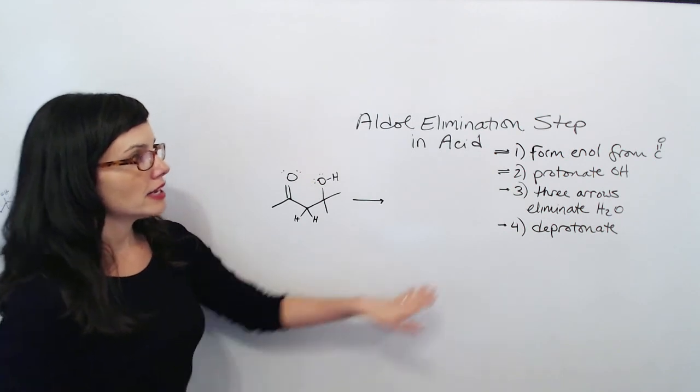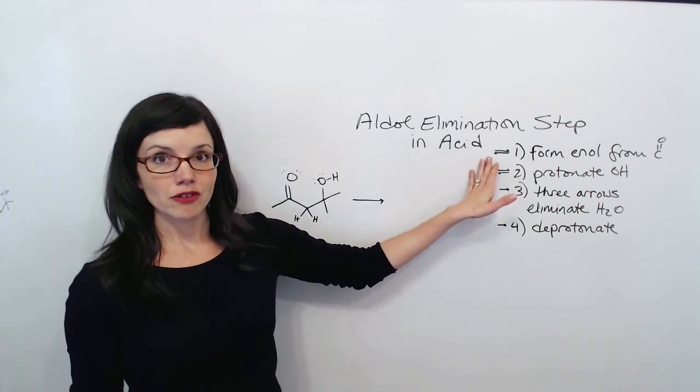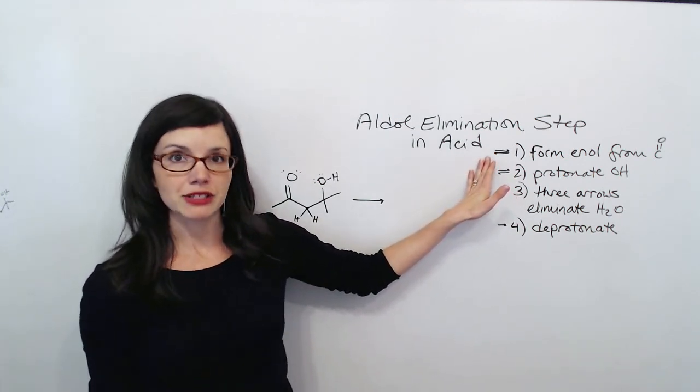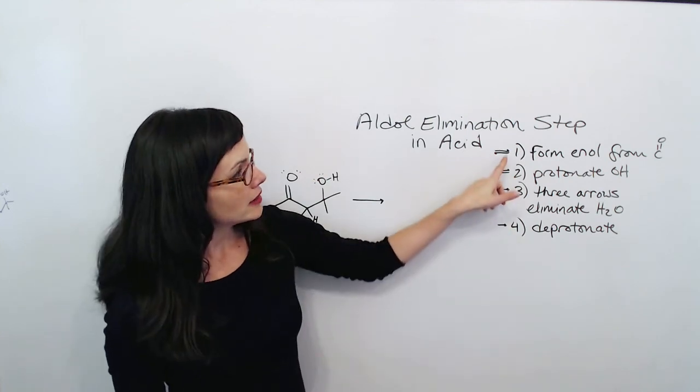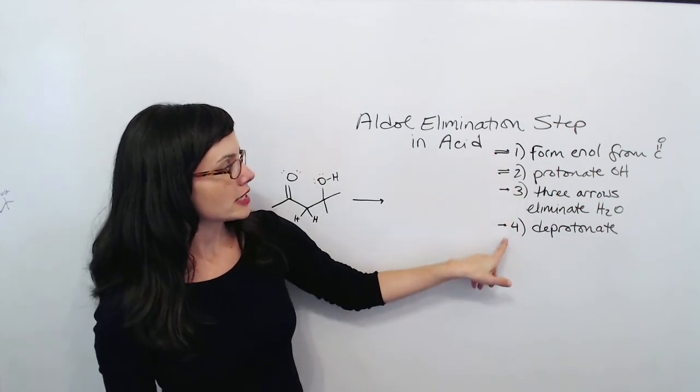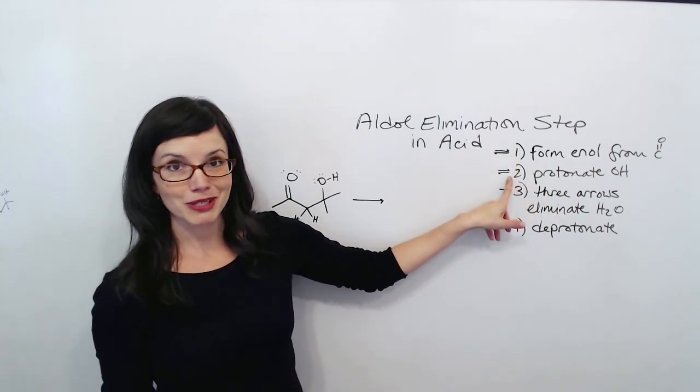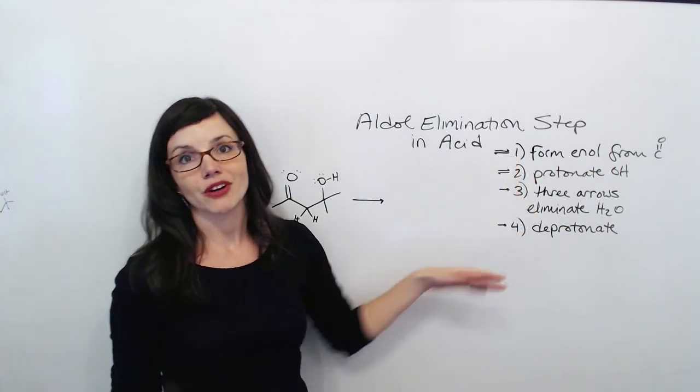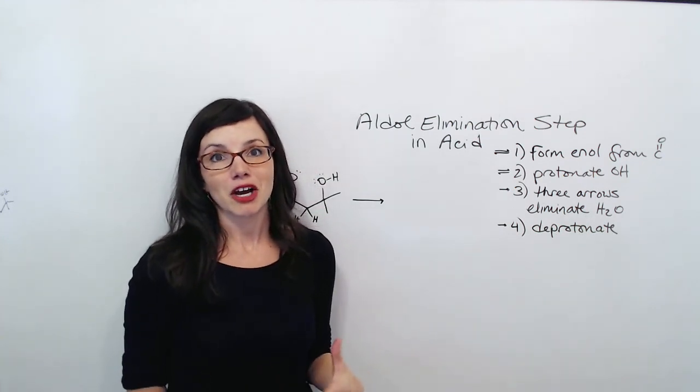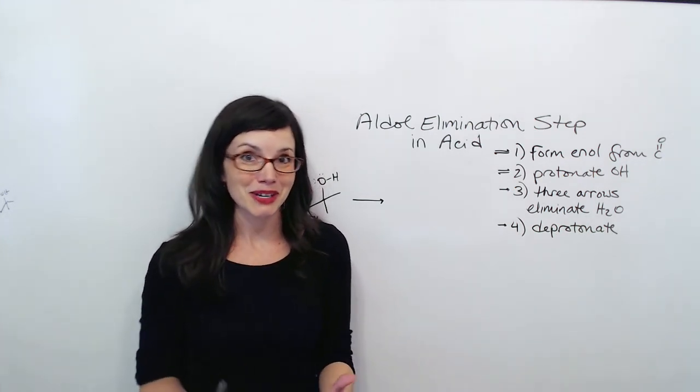Then my first step is to form the enol from whatever carbonyl I have, a ketone or an aldehyde. And you notice how I've got these little arrows here. This is just to help me remember that step one is an equilibrium step, so is step two. And then steps three and four are not equilibrium steps. That's going to help me remember what kind of arrows I need to draw in my mechanism.